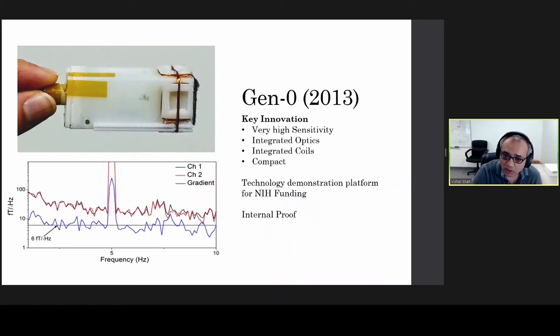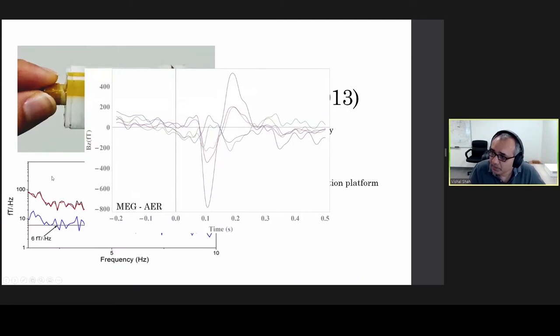The prototypes were sufficiently compact, and they had integrated optics and coils. And these things made the sensors usable, easily usable, and one could place them over the head and start recording MEG data. And this graph here shows auditory evoked responses that were obtained with these Gen Zero prototypes. The signal to noise ratio of the response was just as good, if not better, than what we measured with a squid-based MEG system. And so these results convinced NIH to fund the next bigger phase of funding.